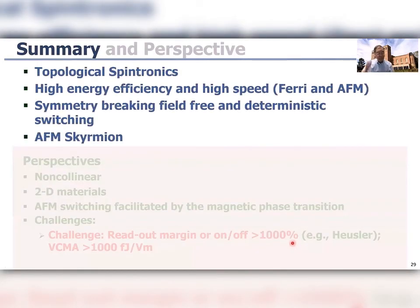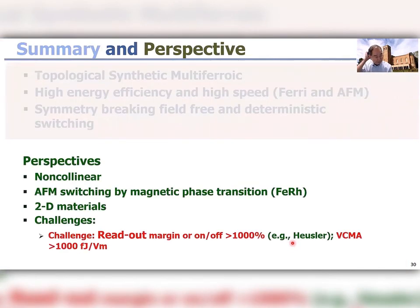In summary, I have discussed topological spintronics and shown high energy-efficient and high-speed ferrimagnetic and antiferromagnetic switching using symmetry breaking — particularly chiral symmetry for field-free and deterministic switching. I also illustrated AFM skyrmions in the ferrimagnetic case. Looking ahead, non-collinear spin textures of antiferromagnets will be very interesting because they give rise to opportunities for manipulating and detecting AFM order in different manners. Also, AFM switching by magnetic phase transition — inducing coupled FM and AFM order in iron rhodium — would make AFM switching more vividly visible.